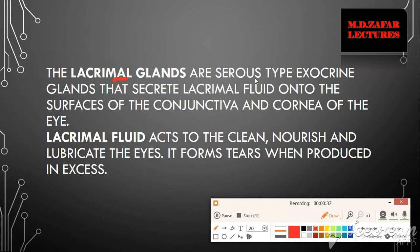Lacrimal glands are a serous type of exocrine glands that secrete lacrimal fluid onto the surface of the conjunctiva and cornea of the eye. Lacrimal fluid acts to clean, nourish, and lubricate the eyes, and when it is formed in excess, it forms tears.